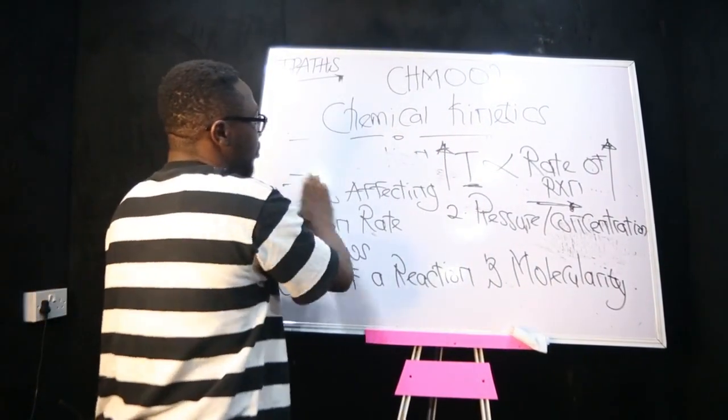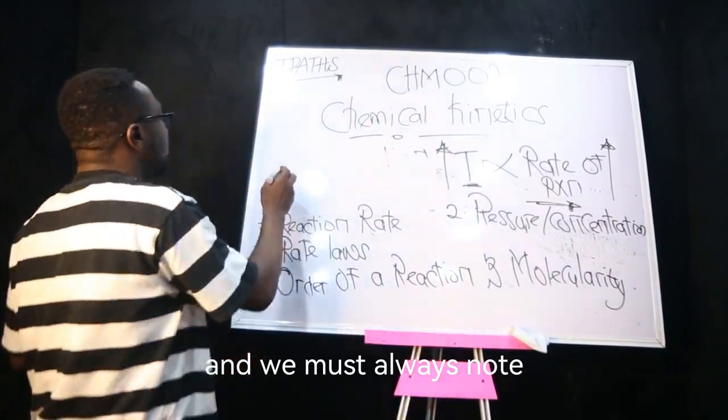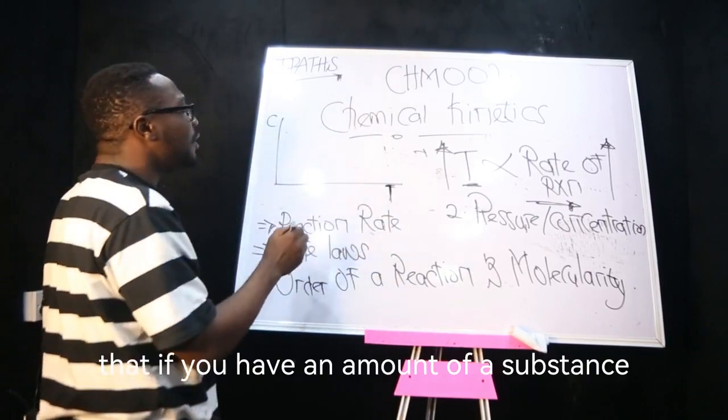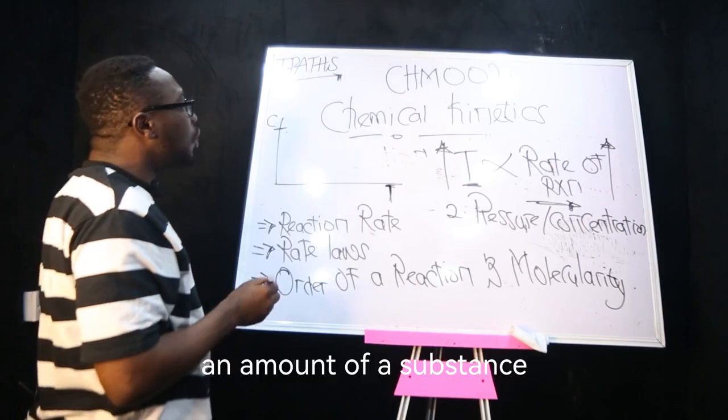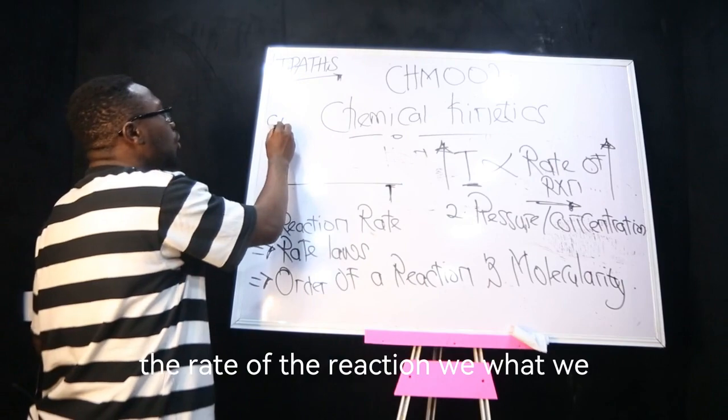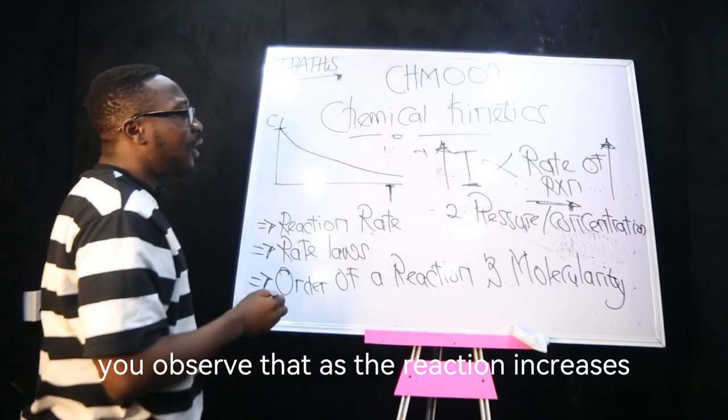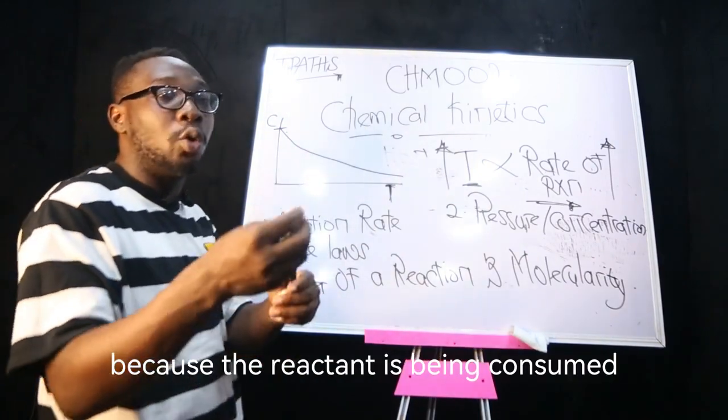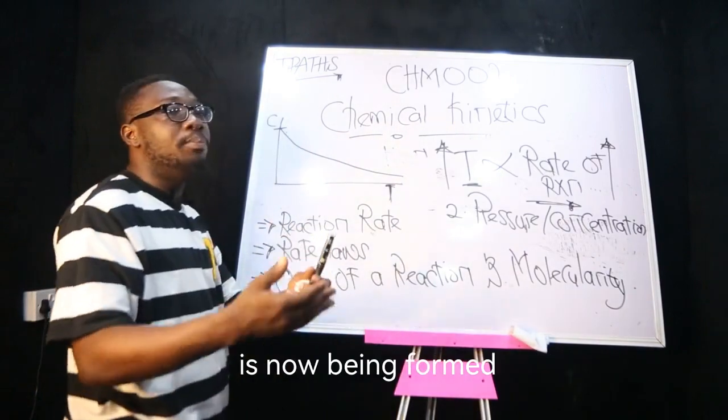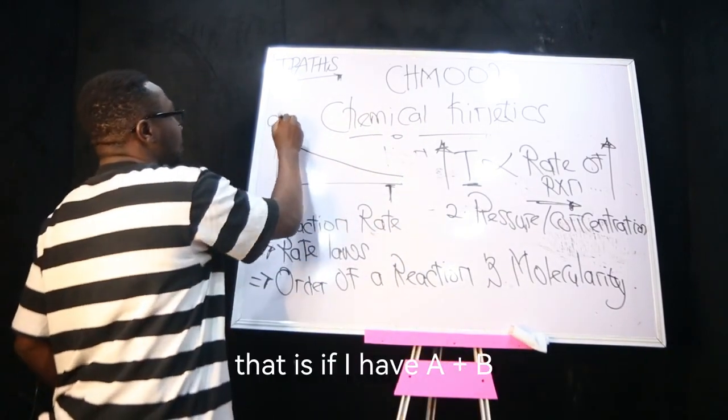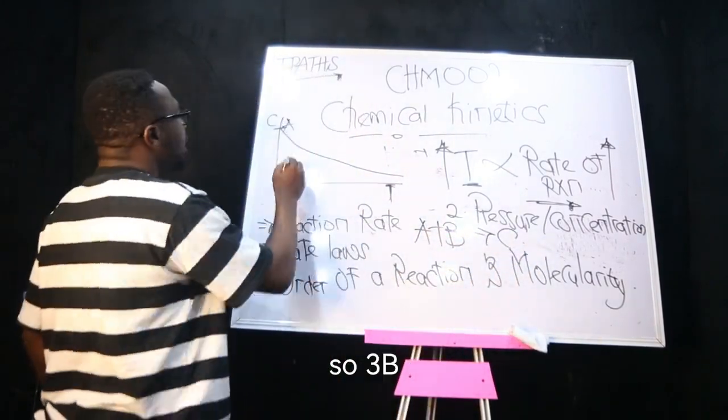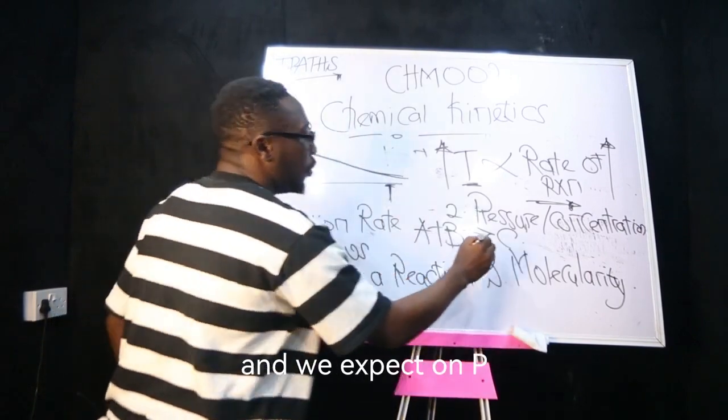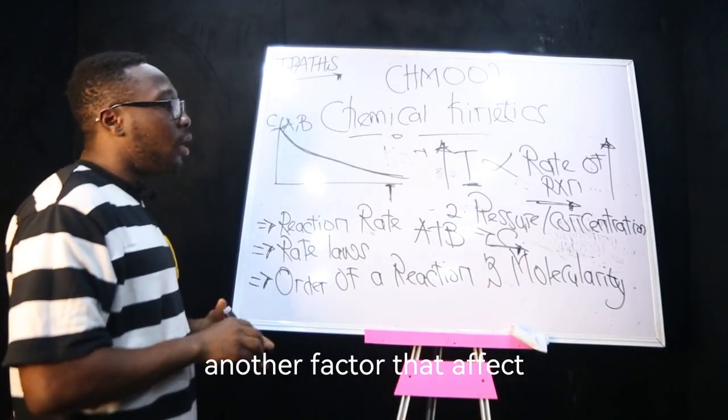If we consider concentration with time, we observe that if you have an amount of a substance, as time increases, the rate of reaction goes down. As the duration increases, the concentration keeps on decreasing for reactants because the reactant is being consumed in the course of a chemical reaction. The product is now being formed. So if I have A plus B giving me C, A and B are reactants, and with time they keep on decreasing, while C, which is the product, keeps on increasing.